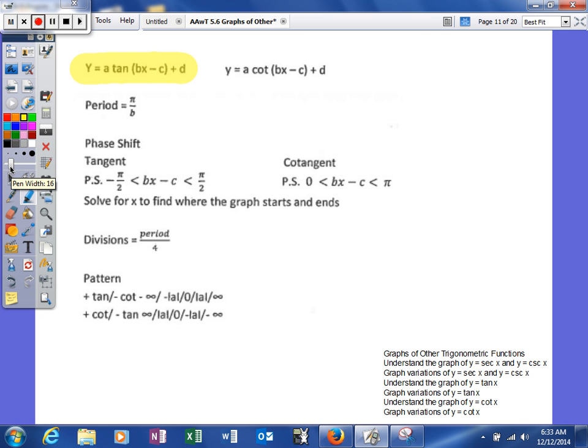And then the period's going to be the same. Well, it's the same for a tangent and cotangent. If you notice, the period is different than what we've dealt with before, and it's π over b.